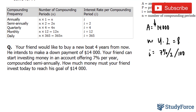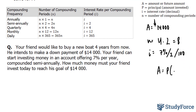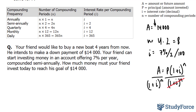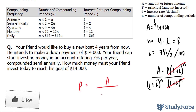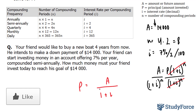Now we need to solve for P. The formula is A equals P times (1 plus i) to the power of N. Isolating for P is easy — you divide both sides by (1 plus i) to the power of N, and we cancel this out, giving us P equals A over (1 plus i) to the power of N.